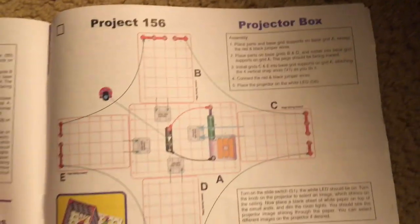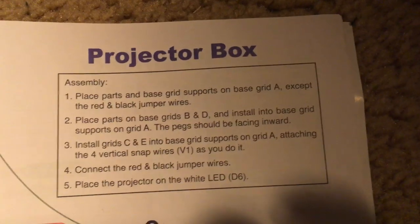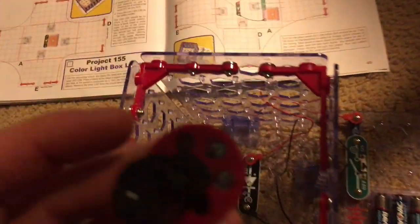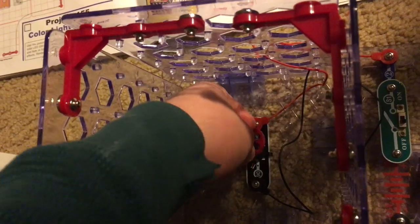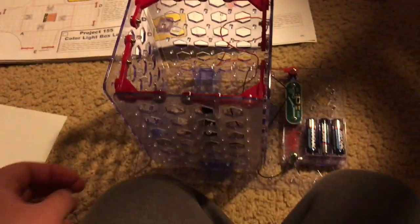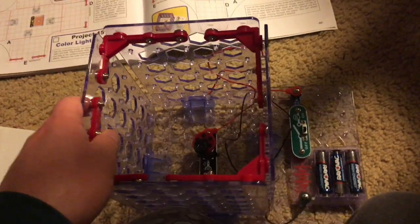Project 156, projector box. First we will place the projector over the white LED. This is what the completed circuit should look like. It's like a tall box, and then we will put a piece of white paper, plain white paper, over the box. Turn off this light and then we will turn on the slide switch.